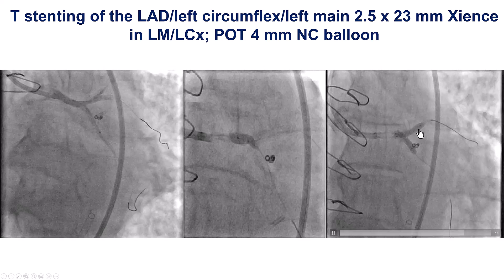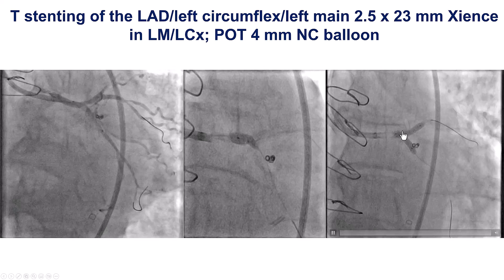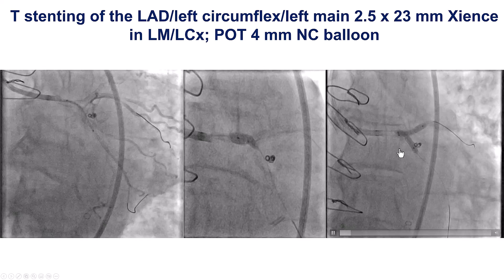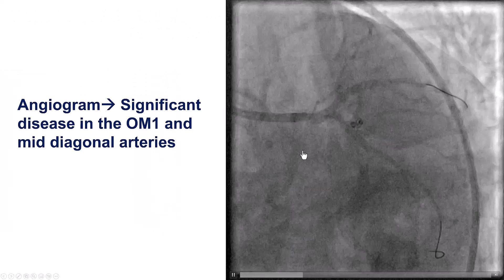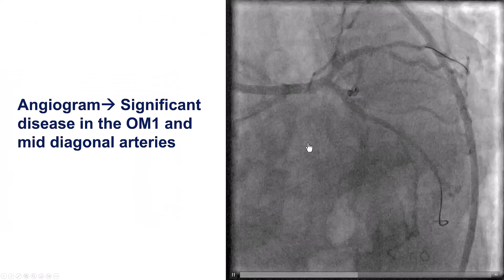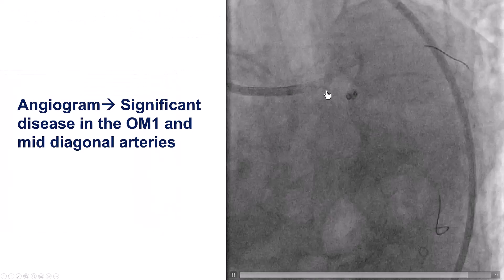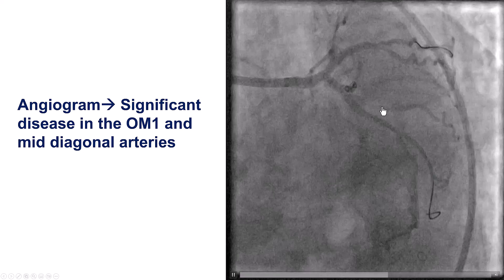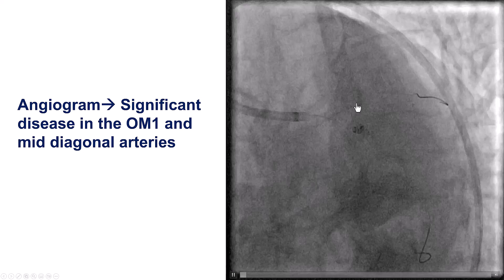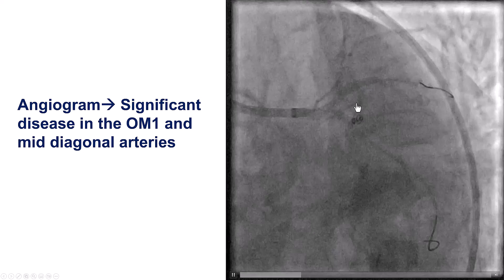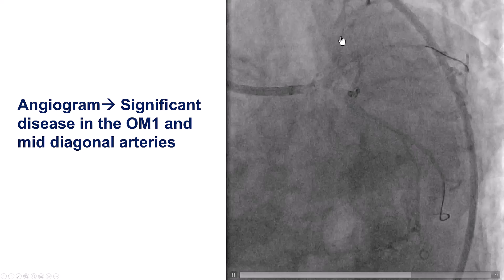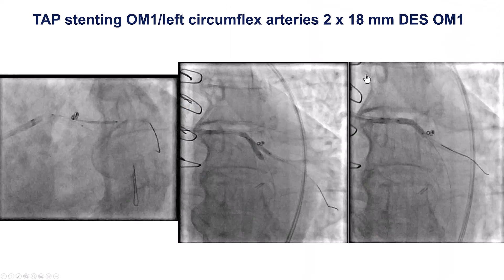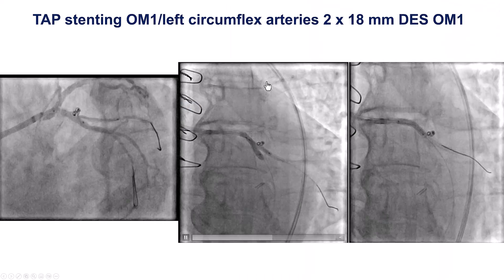We rewired into the Ramus branch where we had placed the previous stent and did a kissing balloon inflation. However, when we did the angiogram afterwards, we saw that the obtuse marginal had been significantly pinched, and there was also not good flow into the diagonal arteries. So we now had some more complexities to address.